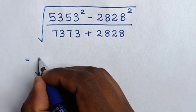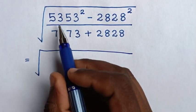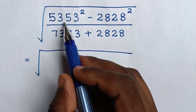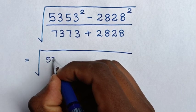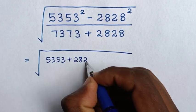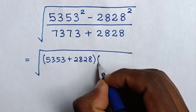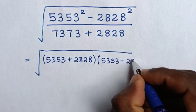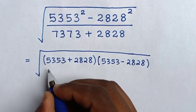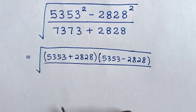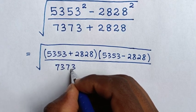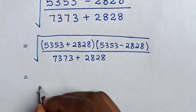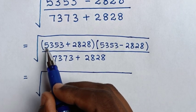It will be equal to square root of 5353 squared minus 2828 squared, which is in the form of a perfect square. So it will be (5353 + 2828)(5353 - 2828), then over, in the denominator the same: 7373 plus 2828.